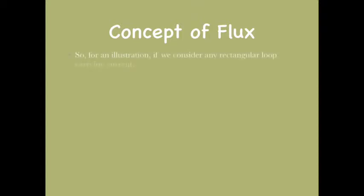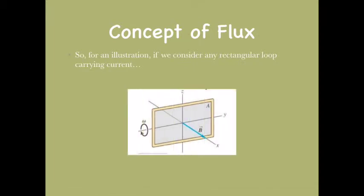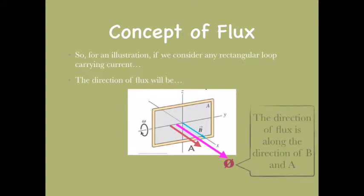To give a better idea, here is a demo with a rectangular loop carrying current. The magnetic field B is shown, and the red arrow shows the area vector. The direction of the flux is given by the pink line — note that the direction of flux is along the direction of B (the magnetic field) and the direction of the area vector.